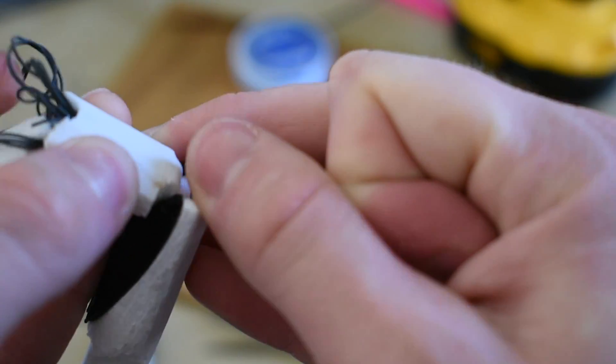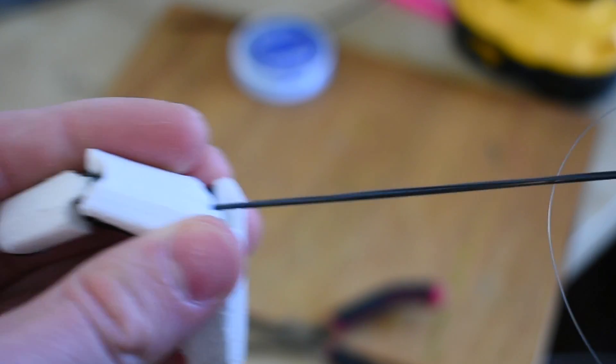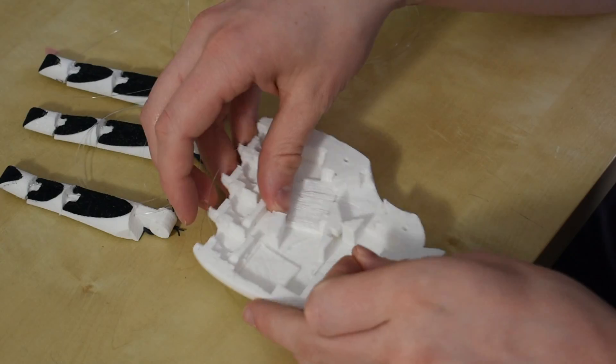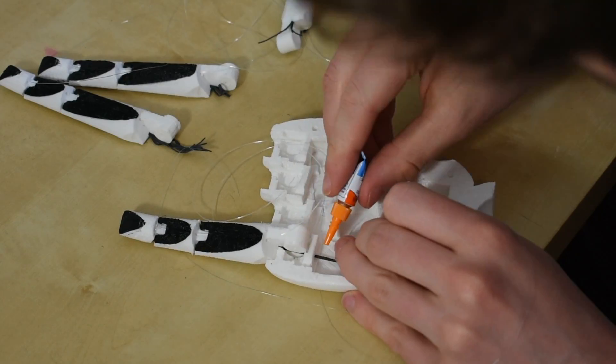Unfortunately I ran out of filament and could not print more. The fingers are contracted by pulling a fishing line. When released, the finger is pulled back by the gray elastic cord.